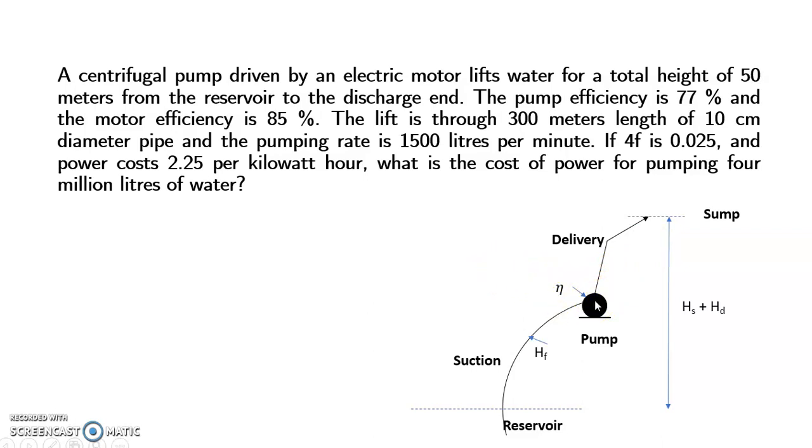So pump efficiency is 77% and motor efficiency is 85%. We make use of these two efficiencies while we calculate the brake power, brake horsepower. HS plus HD is directly given. Now the total head to be calculated involves an extra calculation part of the head loss.